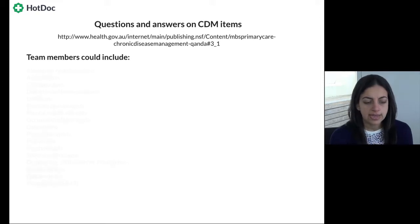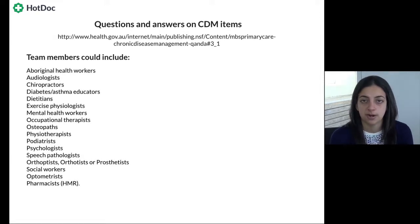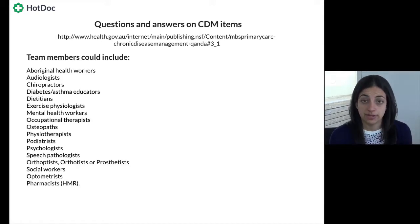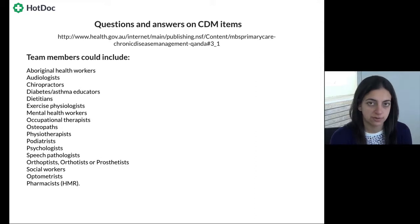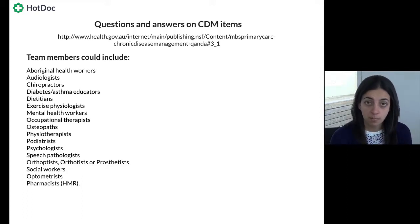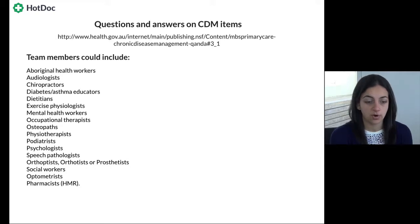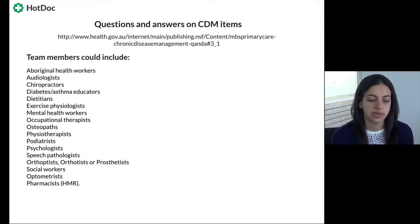Here is a list of health professionals who could be included as part of a team care arrangement: chiropractors, Aboriginal health workers, diabetes or asthma educators, exercise physiologists, dietitians, mental health workers, occupational therapists, and others. Very importantly, the practice nurse — if providing services on behalf of the GP such as triaging or providing the 10997 items — is seen as an extension of the GP and is not counted as one of the two external minimum providers for a TCA.